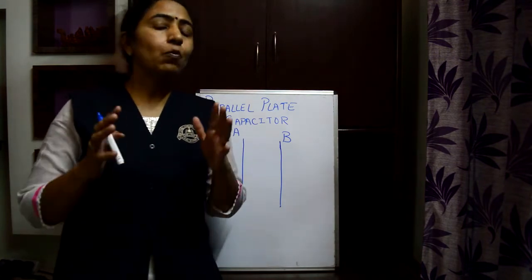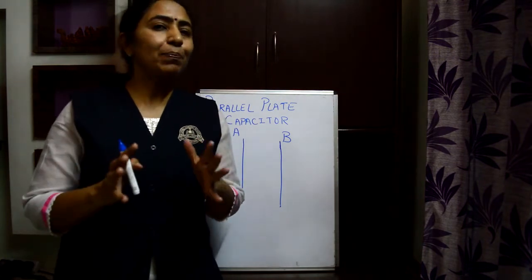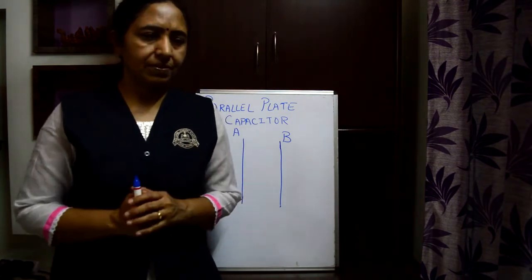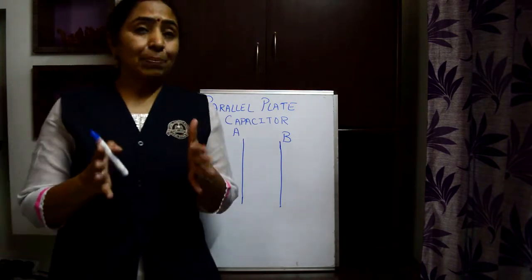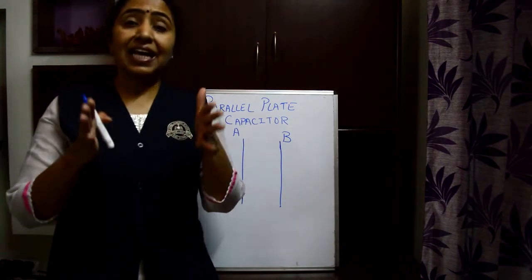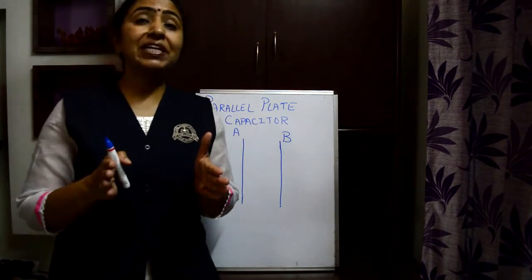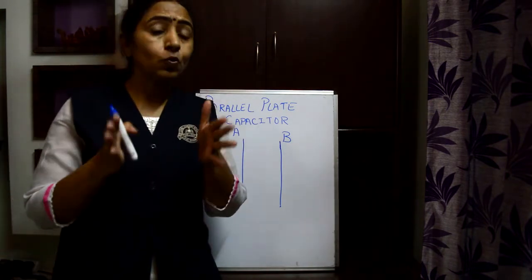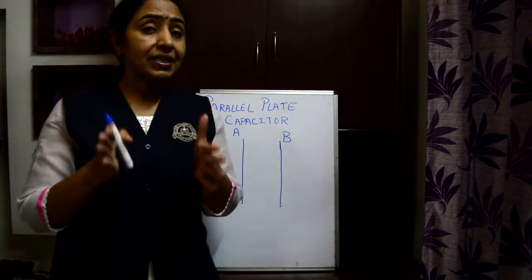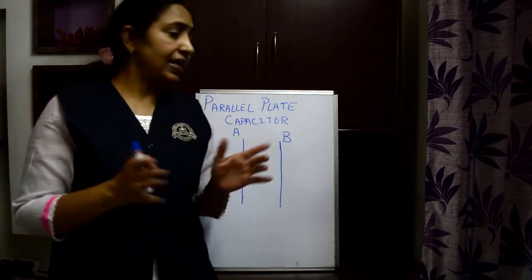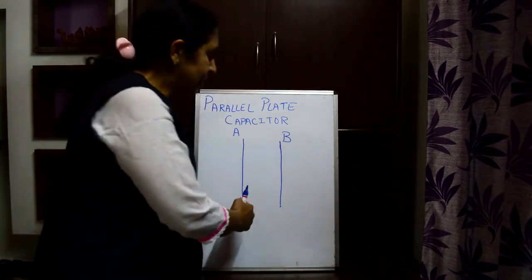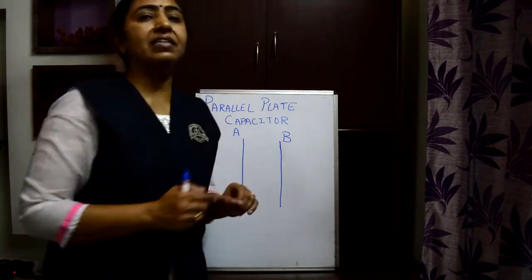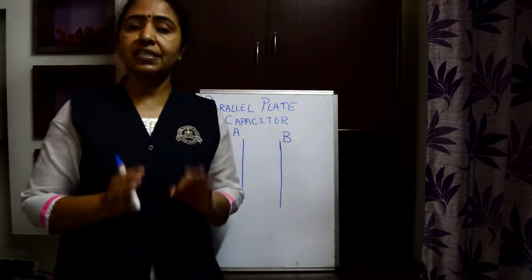Now, what is a parallel plate capacitor? A parallel plate capacitor is an arrangement of two thin conducting parallel plates separated by a certain distance.